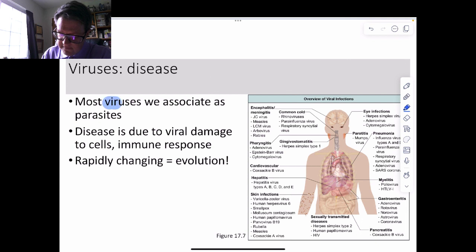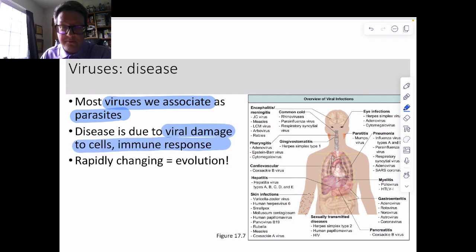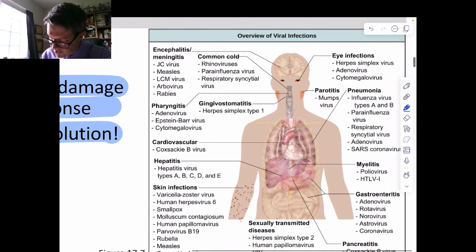We associate viruses with disease and being parasitic. Usually the disease that we see is due to viral damage to ourselves and our immune response, which is somewhat weird. We think it's the virus, but it's actually us responding to them. They're also capable of rapid change, which is to say they rapidly evolve. So whatever defenses or drugs we can come up with, they're probably going to evolve out of it really fast.